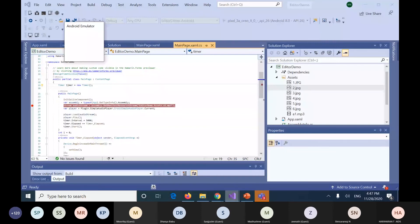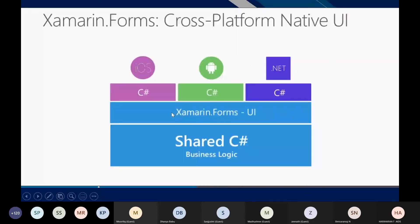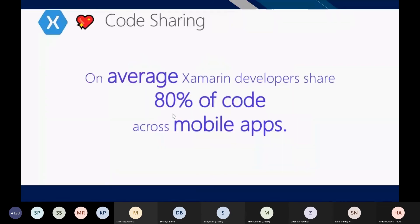I have coded in only one file, and the UWP and Android code is automatically generated by Xamarin. When I run it, it will run as-is in the native environment. As I said, the average Xamarin developer shares about 80% of code across mobile apps.